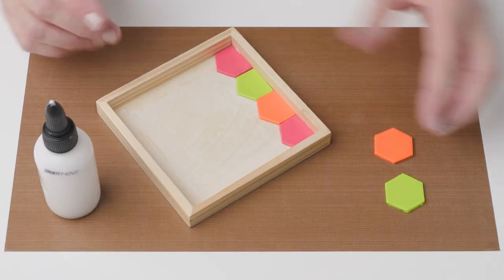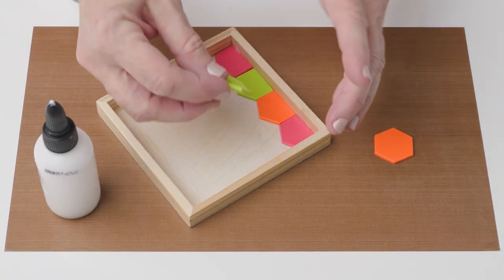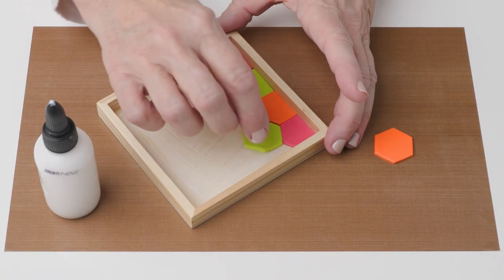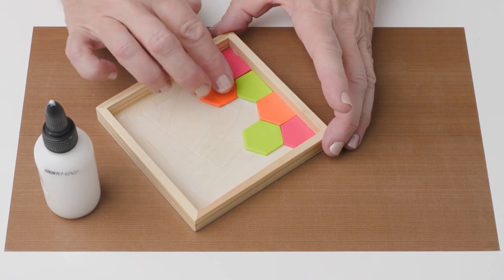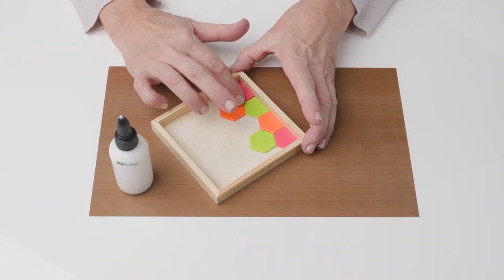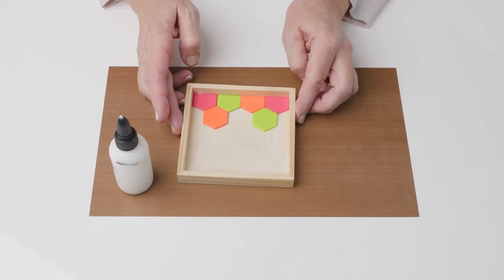Oven-baked clay adhesive needs to be baked to make it permanently cured, just like primo. So you bake it according to the manufacturer's instructions and when it comes out of the oven, it's completely, permanently bonded.